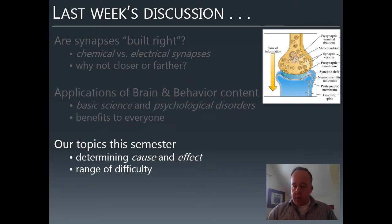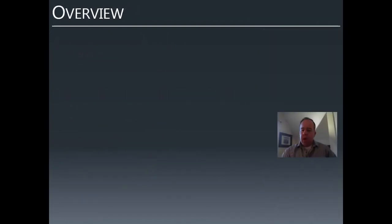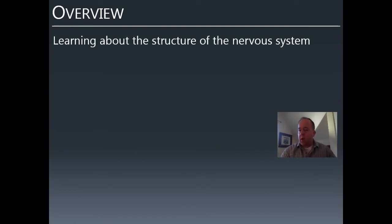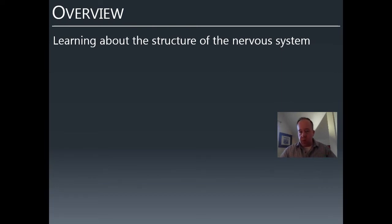Good discussion this last week. Remember you need to contribute a total of eight times during the semester. By way of overview, this lecture looks at the nervous system from a structural perspective. We'll talk some about function—what different parts of the nervous system do—but we won't understand how the nervous system does these things until a later lecture, because we don't understand how neurons work yet. For now, we'll learn different parts of the nervous system and describe what they do psychologically or physically.